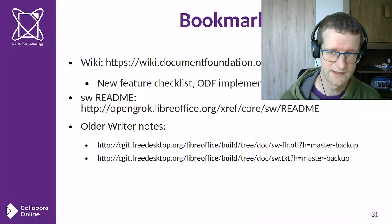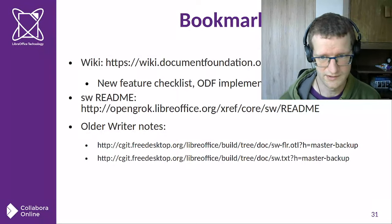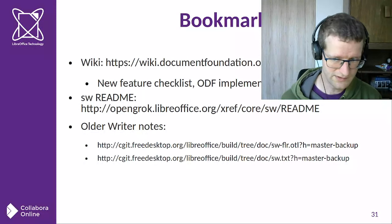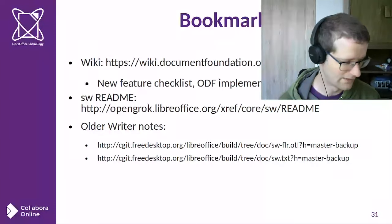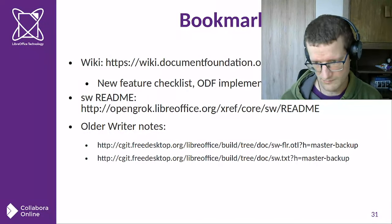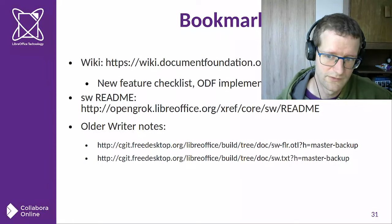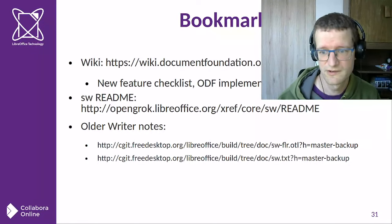I guess that was more or less it. In the last slide, I have some bookmarks for you. One is the Writer development wiki page, which has a checklist for new features and bookmarks for the ODF implementer notes and so on. The other thing is the SW module has a readme, and that has bookmarks for further wiki pages — do read that, as we spent some time filling it in with useful content. From the old times there are also two other overviews of Writer core that are also interesting to read. Thanks for your attention.